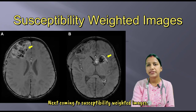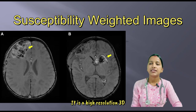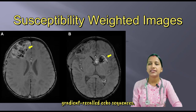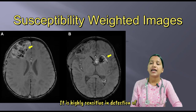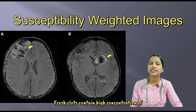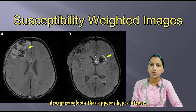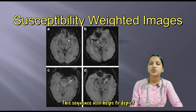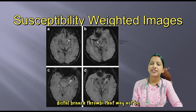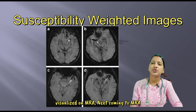Coming to susceptibility-weighted imaging — a high-resolution 3D gradient recalled echo sequence — it is highly sensitive in detection of hemorrhage. Fresh clots contain a high concentration of deoxyhemoglobin, which appears hypointense. This sequence also helps to depict cortical branch thrombi that may not be visualized on an MRA.